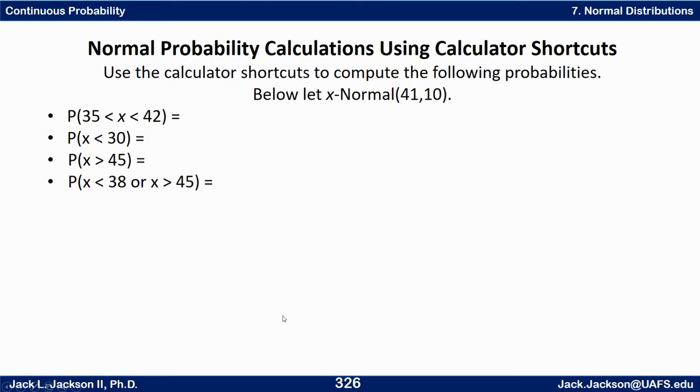So we can compute these four different probabilities. We got a between probability, left probability, right probability and outside probability. You should know how to do this.